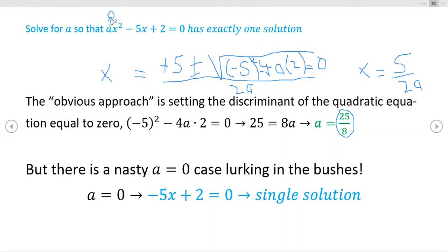We're supposed to find any time this expression here has a single solution, whether it be the usual quadratic or whether it be the linear that you get if A is equal to 0. And so you see right here, if you have A = 0, this equation just reduces to -5x + 2 = 0, which is what you see right down here.